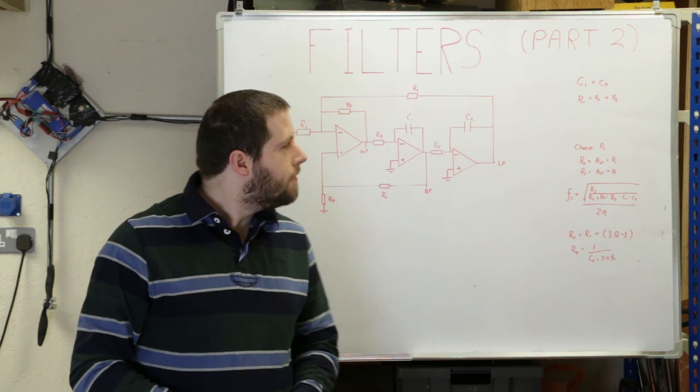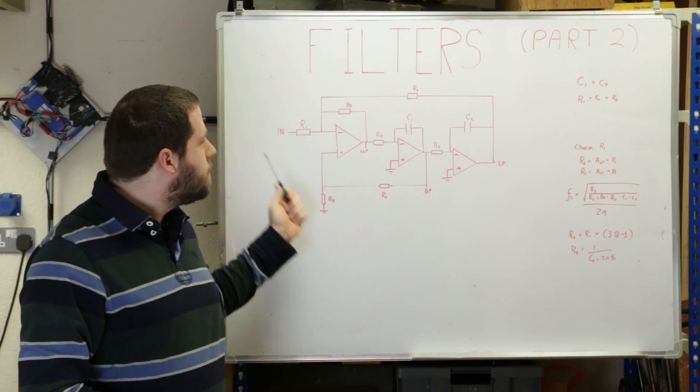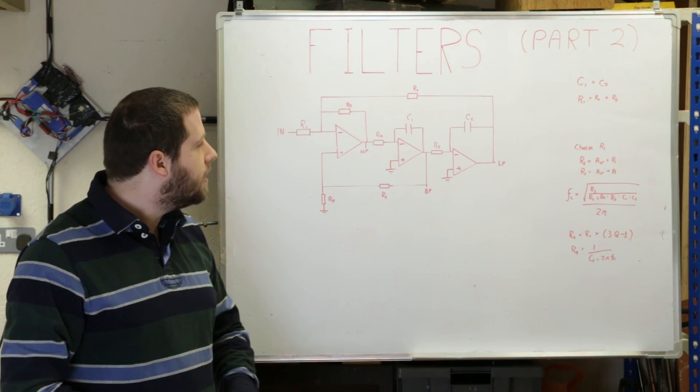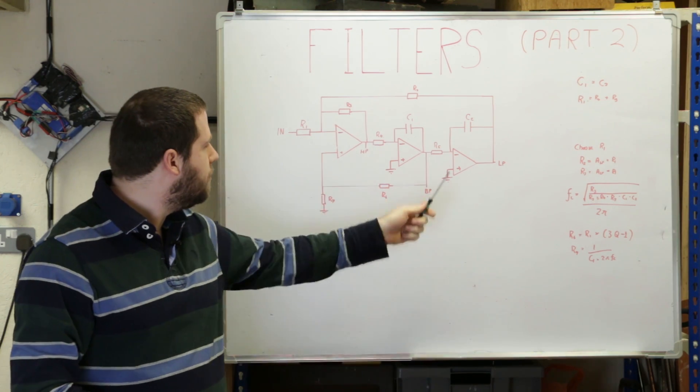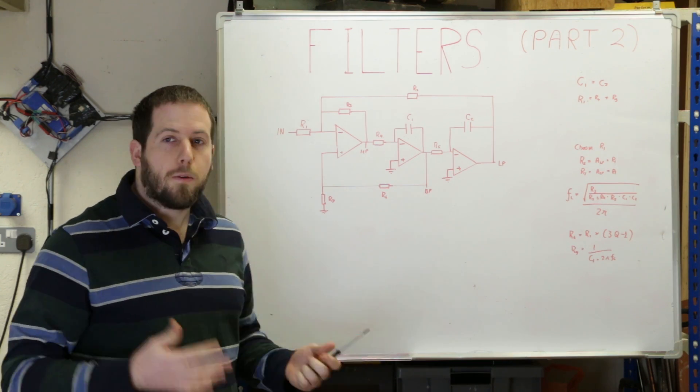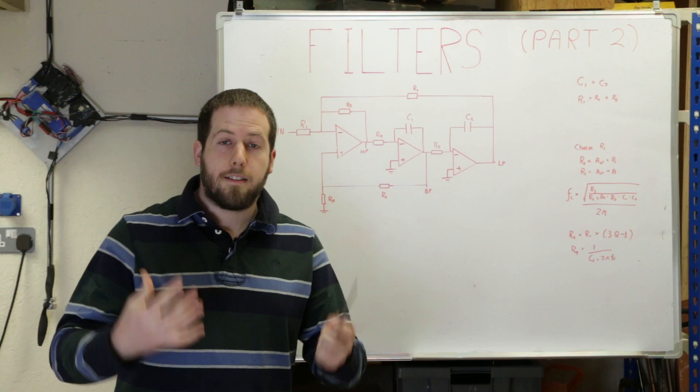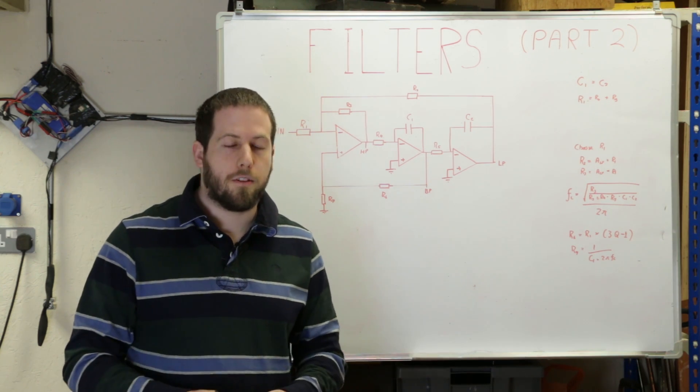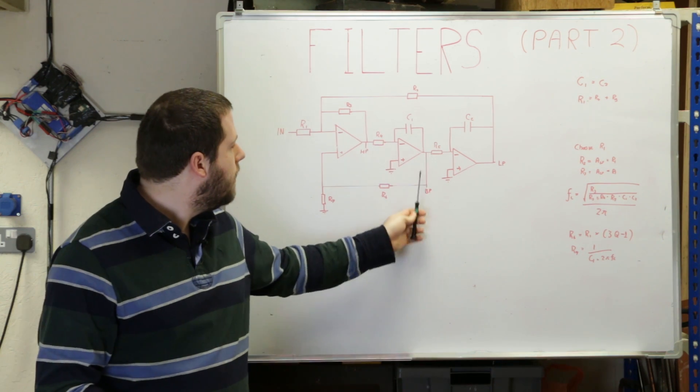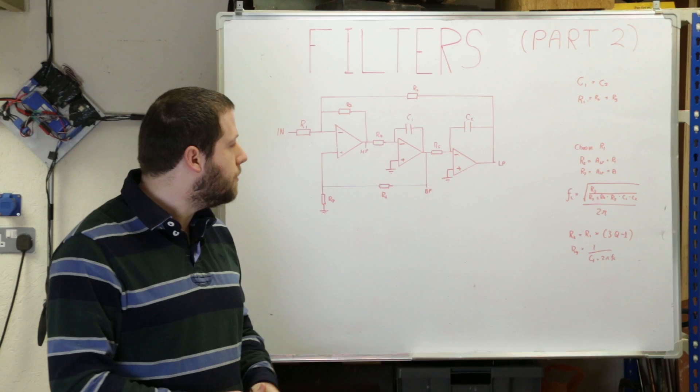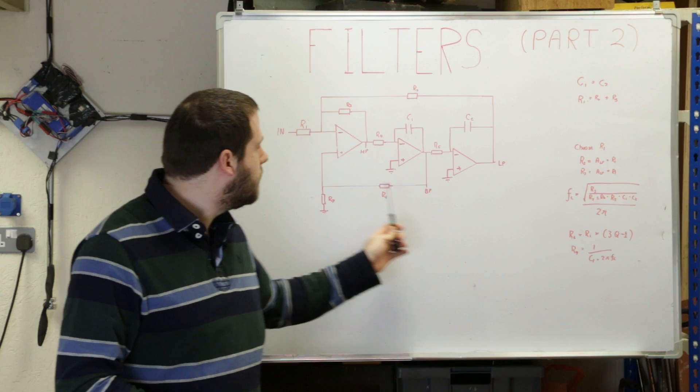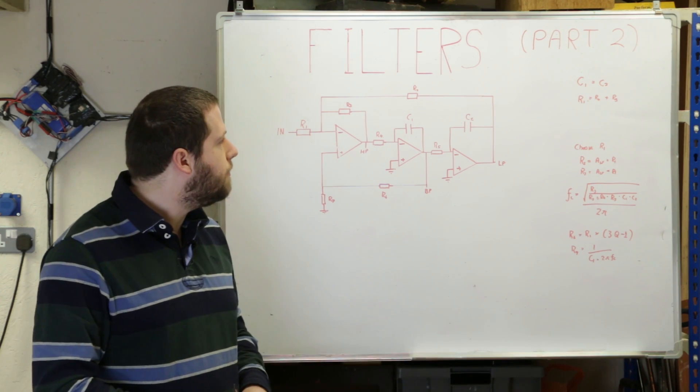So let's do a design example for the state variable filter. We've got an example up on the board behind me. We've got a lot of resistors to choose, a couple of capacitors to choose. Op-amps - the selection isn't too critical, but we'll go through some of those factors as well. Then we'll select our Q value here and take that through. So first of all let's put some specifications together. We'll do a 10kHz cutoff frequency, and that will give us a 10kHz low pass filter, high pass filter, and a band pass filter. And also if you want a notch filter, really simple bit of external circuitry - all you do is just have a summing circuit to sum the low pass and high pass outputs. Nice and straightforward.